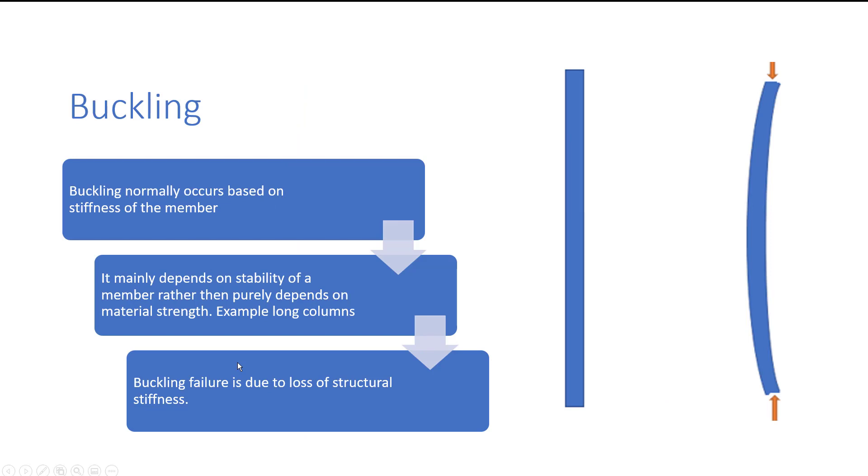Buckling generally occurs based on the stiffness of the member rather than the material itself. We normally call it as a short column and long column - the long column will undergo buckling and short column will go for crushing. The material remains the same.